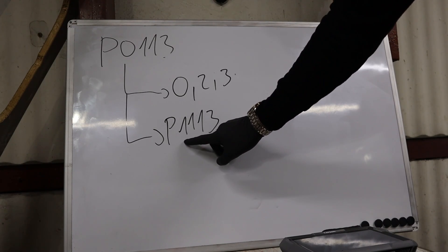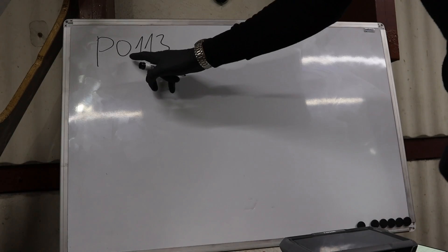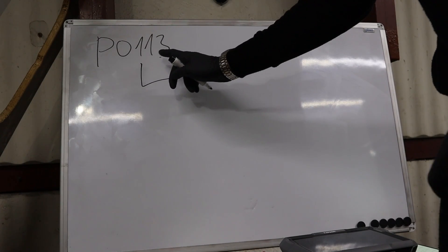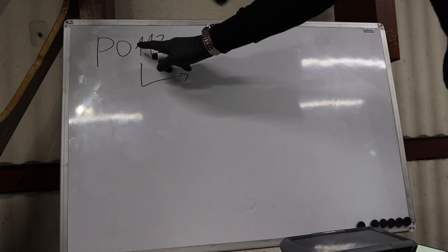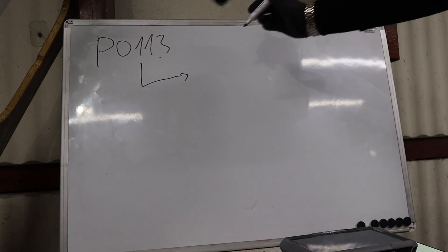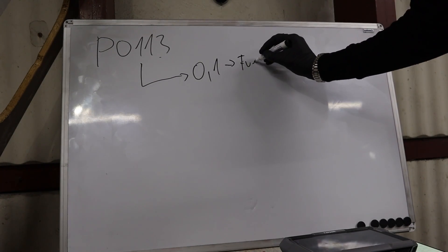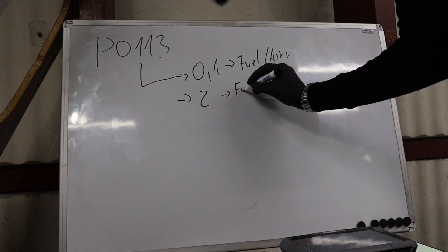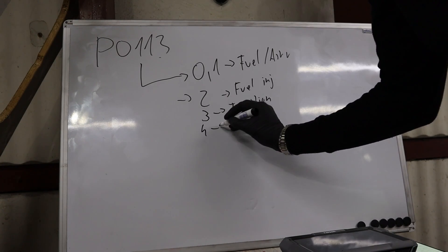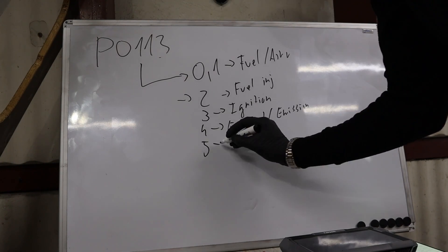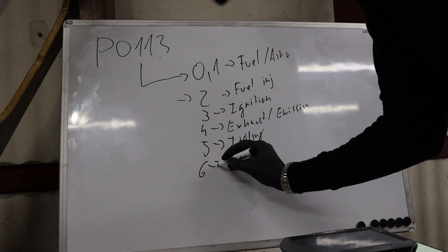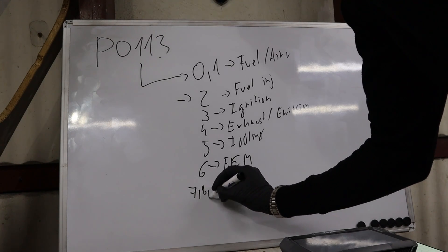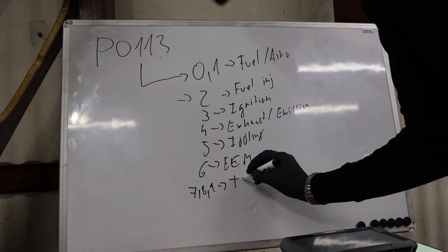Then you have the third digit — we have one here, but this is only for powertrain codes. If you have other codes like body or chassis, this is not applicable. But for powertrain codes: zero or one is fuel and air mixture codes, two is for fuel injectors, three is for ignition, four is exhaust and emission systems, five is for idling, six is for the engine control module (ECM), and seven, eight, and nine are for automatic transmission.